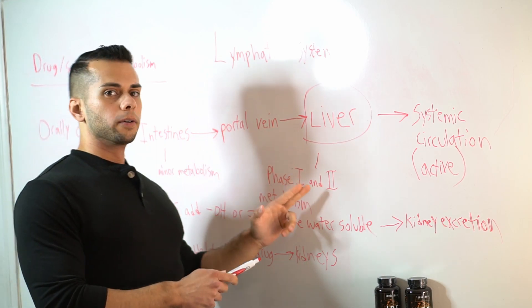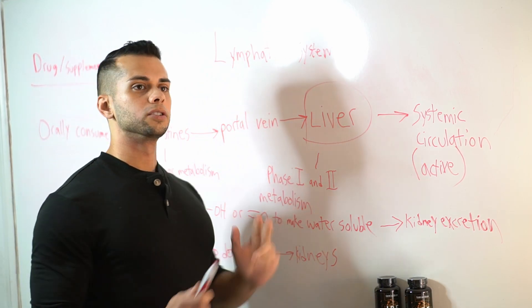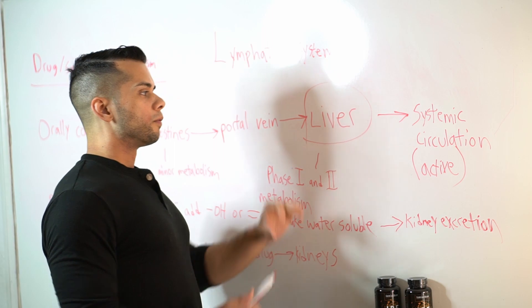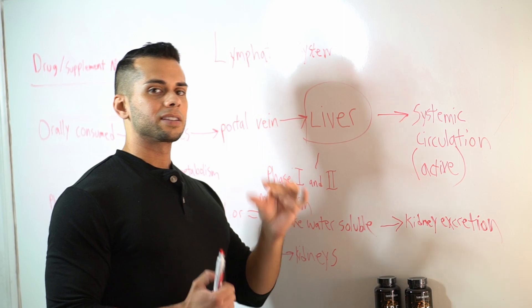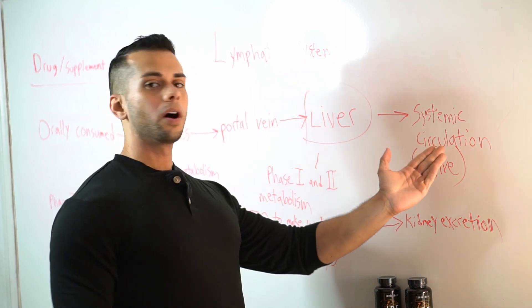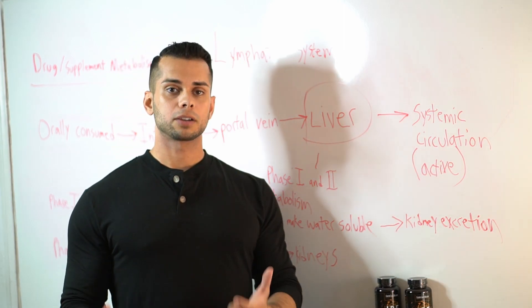So going through the liver, undergoing this phase one, two metabolism, forming a lot of metabolites. And then from there, the active ingredient that still survives is able to go on into what is known as systemic circulation.